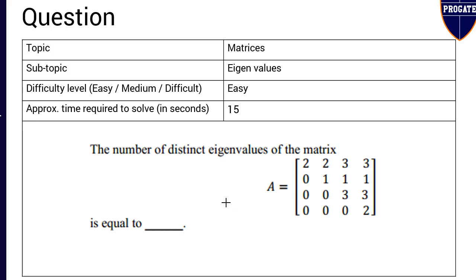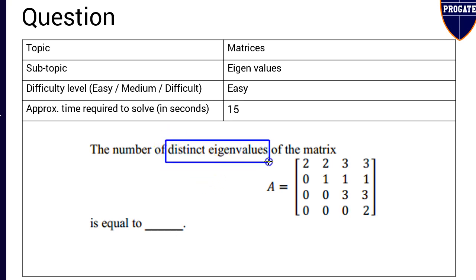This question belongs to the topic of matrices and the subtopic is eigenvalues. The difficulty level of this question is easy. The approximate time required to solve this question is 15 seconds. The question asks for the number of distinct eigenvalues of the matrix.